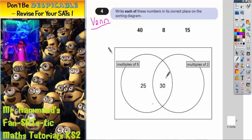So the circle on the left is only multiples of 5 and that bit is labelled for us. The circle on the right is only multiples of 2. In other words, even numbers. So that bit is labelled for us.